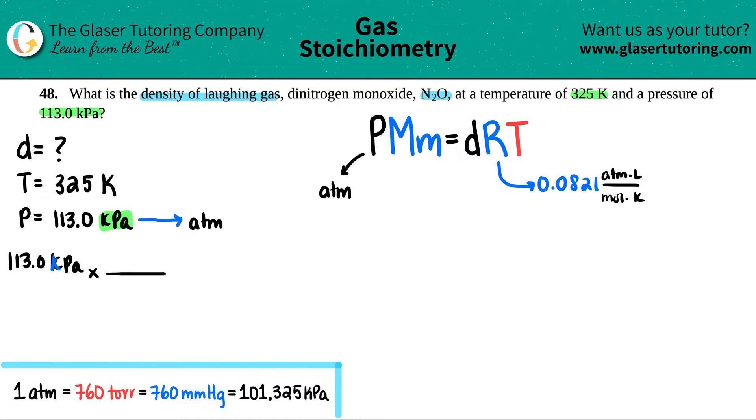So if I don't want kilopascal, I'm going to put that on the bottom, KPA. And I'll put the ATM on the top. And here is the list of the big four pressure units that you probably have to memorize. In this case, we only care about ATM and kilopascals. They're all equal to each other. So just memorize the numbers.